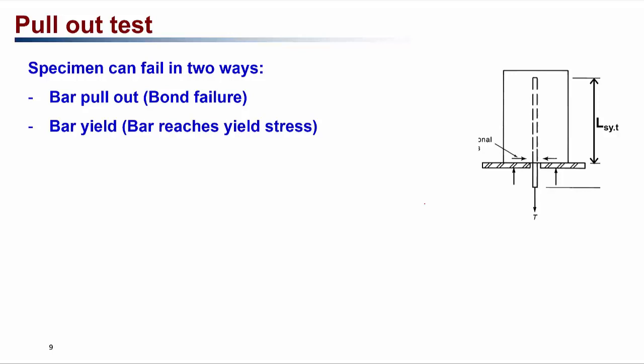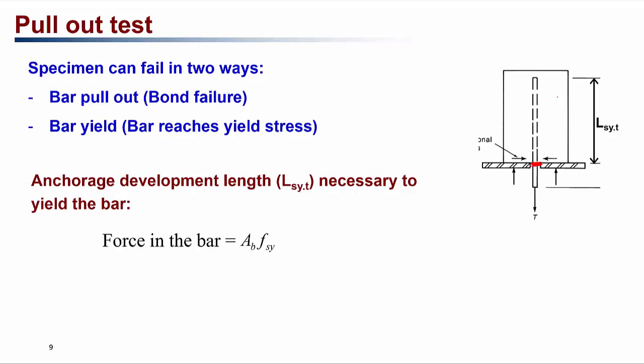For this pull-out specimen, there can be two different kinds of failure. The first is the bar can be pulled out, which is called bond failure. The second failure mode is if there is enough embedment of the steel into the concrete, the bar can yield at that point instead of being pulled out. We can find out the minimum embedment length needed to make the steel bar yield without being pulled out.